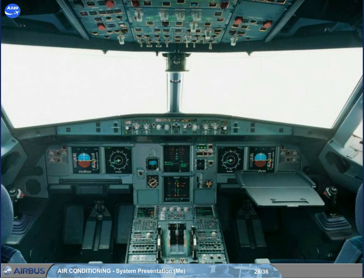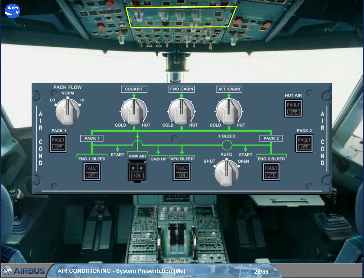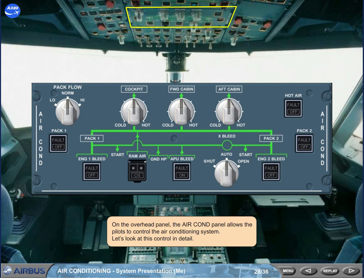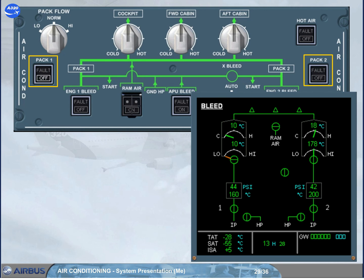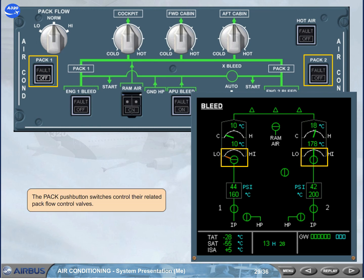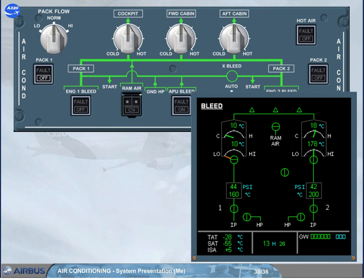On the overhead panel, the air conditioning panel allows the pilots to control the air conditioning system. The pack push button switches control the related pack flow control valves. In this example, pack 1 push button switch is selected off and the related valve is closed; pack 2 push button switch is selected on and the related valve is open.